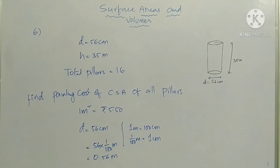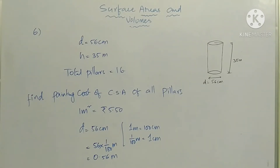Good morning to all my dear students. Today we are going to discuss surface areas and volumes, Exercise 10.2 remaining problems. This is our sixth problem: a cylindrical pillar has a diameter of 56 centimeters and is 30 meters high. There are 16 pillars around the building. Find the cost of painting the curved surface area of all pillars at the rate of five rupees fifty paise per one meter square.